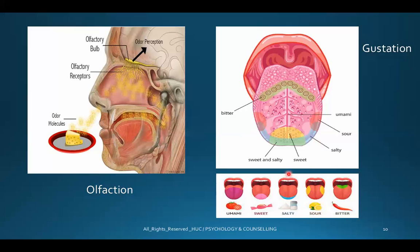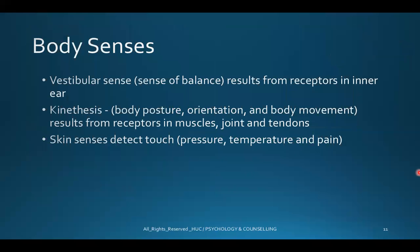Umami is described as the taste of deliciousness. It is considered a combination of all four tastes — sweet, salt, sour, and bitter — so it gives you all four together. You can test the different taste regions at home by placing different types of food in those regions on your tongue to identify each taste.